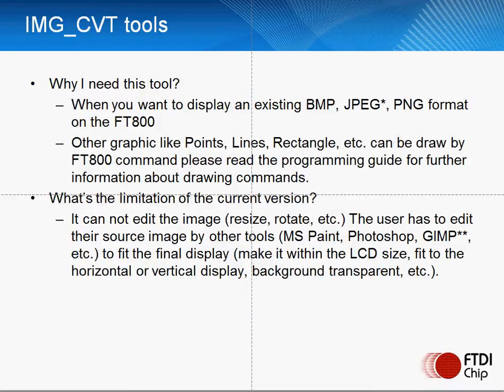Starting with the image conversion utility — why would you need this tool? You may have existing images taken from a camera or generated elsewhere that you would like the FT800 to drive to a display. This utility allows you to create compatible bitmaps or JPEG images. Other graphical objects such as points (circles), lines, or rectangles are available within the FT800 command structure, so no additional conversion is required for those.